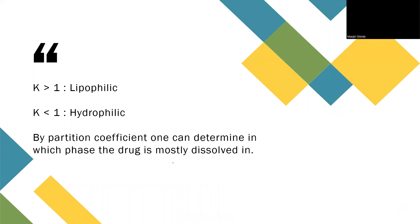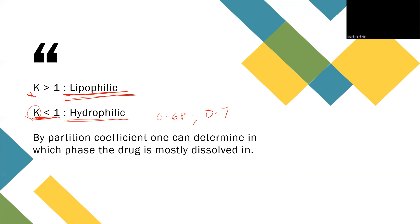It is important to remember that if you get K more than one, your drug is considered lipophilic, which means your drug is getting dissolved in the oil phase more than the water phase. If you find that your K is less than one — like 0.68 or 0.7 — that is your partition coefficient K, and it tells us that the drug is more towards the hydrophilic character. So one can determine in which phase the drug is mostly dissolved.